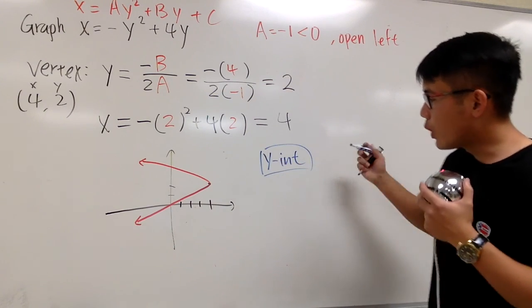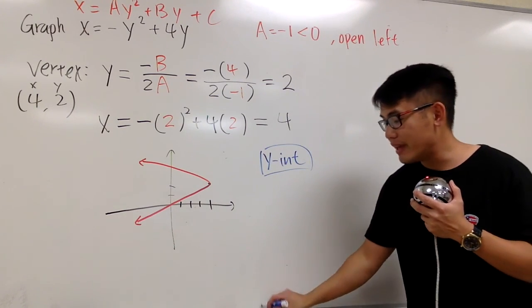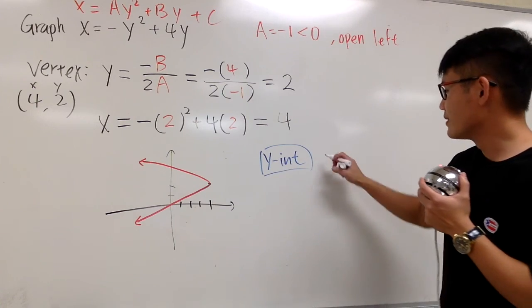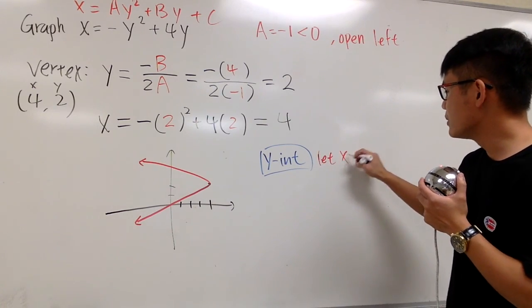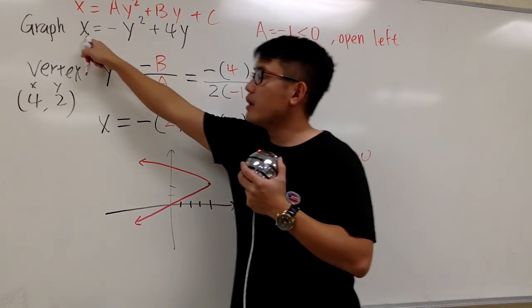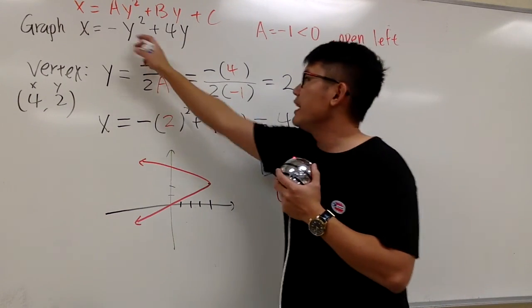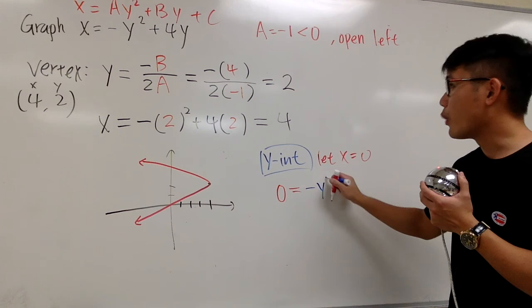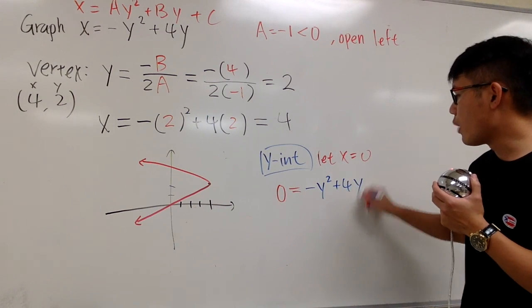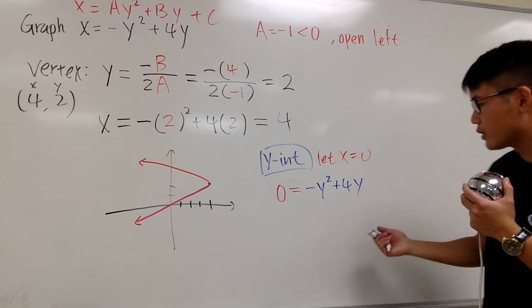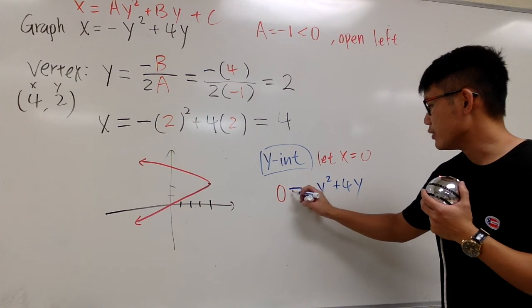And I'm just going to find the y-intercept for you. For the y-intercept, all we are going to do is make x equal to 0. So I'm going to plug in x equals 0 into here. So we have 0 equals negative y squared plus 4y.